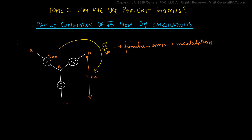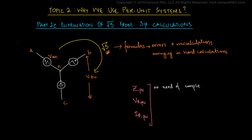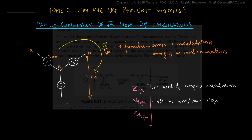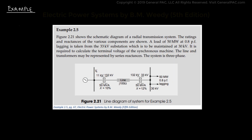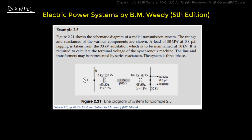Also, the square root of 3 factor can be annoying and an eyesore in hand calculations. However, when the impedances, voltages, and currents in three phase systems are transformed into per unit equivalents, the need for complex calculations is eliminated. The use of square root of 3 is reduced to one or two steps. To polish this idea, let's solve an example from the book Electric Power Systems by BM Weedy, 5th edition.